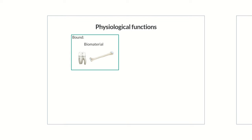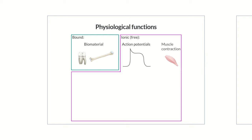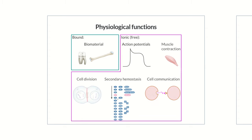For all other physiological functions, calcium is required in its free ionic form. Ionic calcium is involved, for example, in forming action potentials in the cross-bridge cycle in muscle contraction, in cell division, as factor IV in secondary hemostasis, and as a neurotransmitter and second messenger in cell communication.